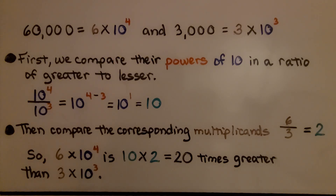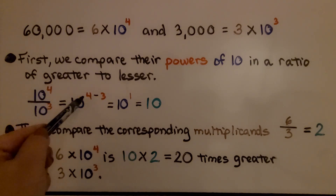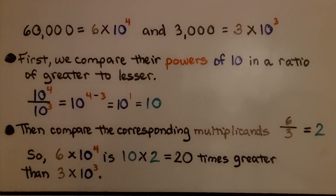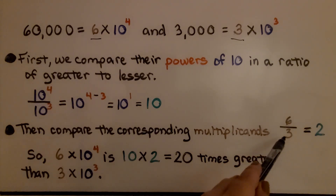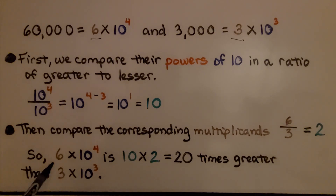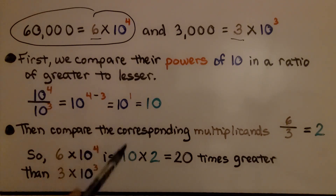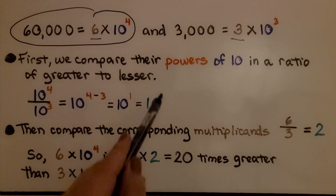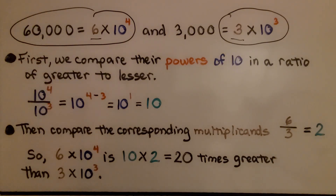First, compare their powers of 10 as a ratio of greater to lesser: 10 to the fourth power divided by 10 to the third power. Using the quotient rule, that's 10 to the 4 minus 3, which equals 10 to the first power, or 10. Then compare the corresponding multiplicands: 6 over 3 equals 2. So 6 times 10 to the fourth power is 10 times 2, which is 20 times greater than 3 times 10 to the third power.